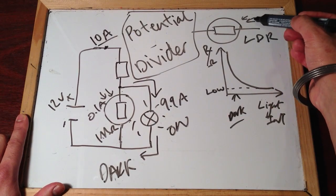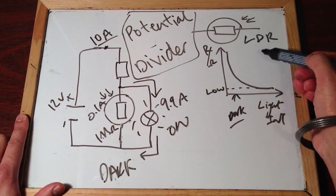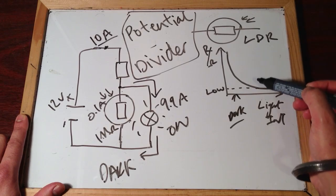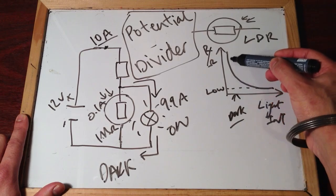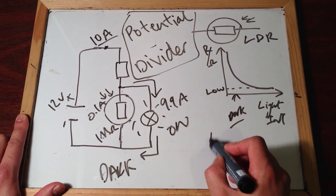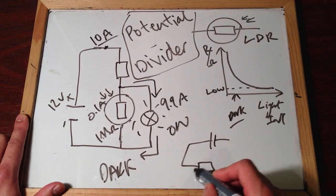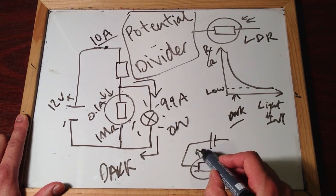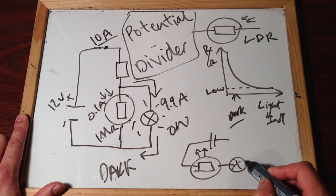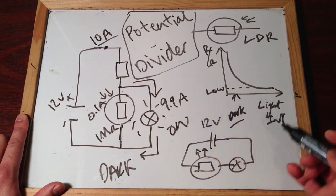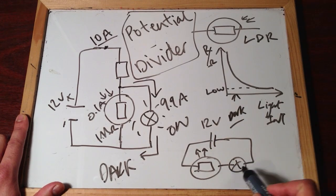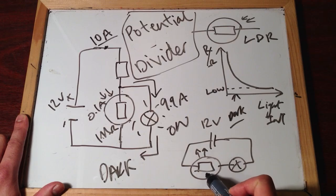Your initial question was, how is it, how could we use an LDR to turn a light on, because when it's dark, resistance is going to be high. So, if you used, if you were thinking of this kind of circuit, where you've got an LDR in series with a bulb, if we had this setup, you're absolutely right, it would be useless, because it means the bulb will be on when it's light.